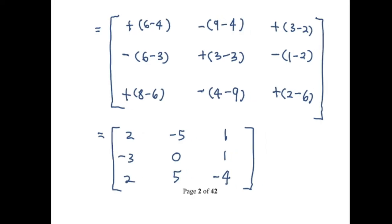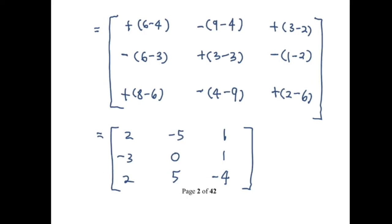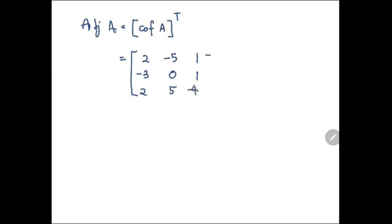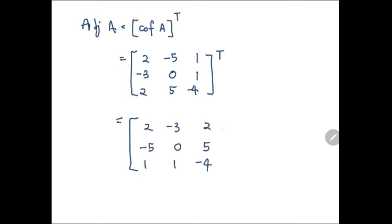Now, to find the adjoint, as we learned, adj(A) is the transpose of the cofactor matrix. So we take [2, −5, 1; −3, 0, 1; 2, 5, −4] and transpose it. Therefore, adj(A) = [2, −3, 2; −5, 0, 5; 1, 1, −4].